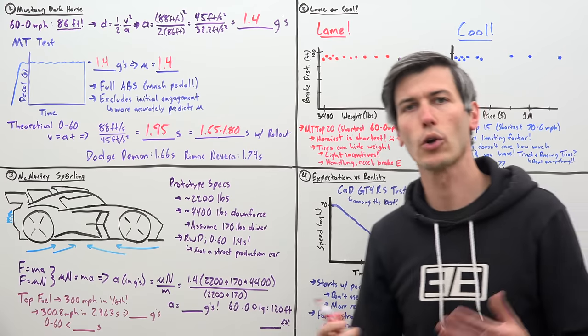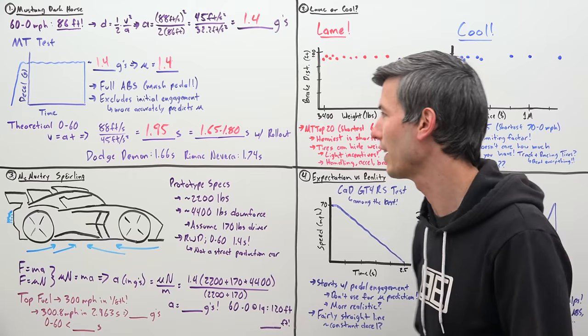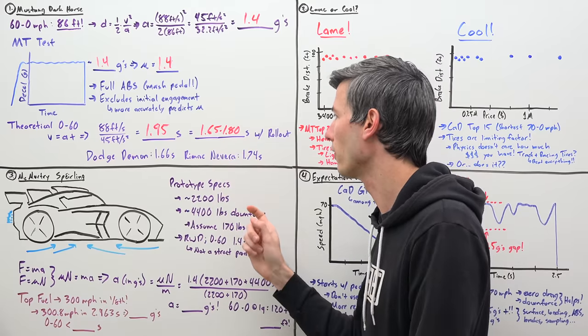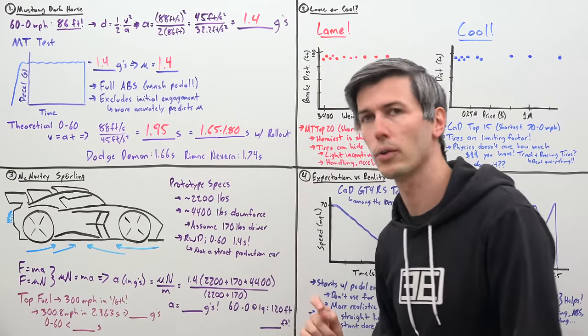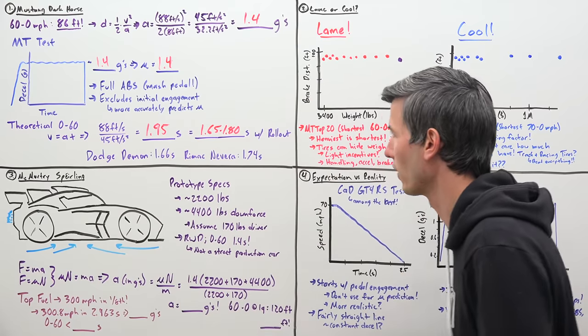So this would give us a theoretical predicted zero to 60 time of about 1.65 to about 1.80 if you were deleting that first foot of rollout. Real zero to 60 time is this 1.95. But if you look at the current claims for records out there, Dodge Demon saying they are doing it in 1.66 seconds with rollout. So that does fall within this range, as well as the Rimac Navarra, which they claim a zero to 60 of 1.74 seconds, again, using rollout. So deleting that first foot of acceleration.